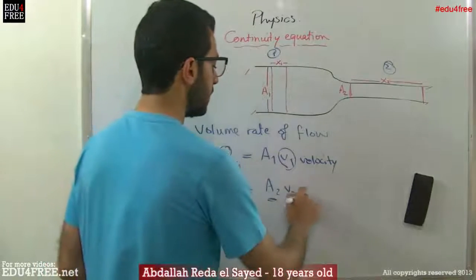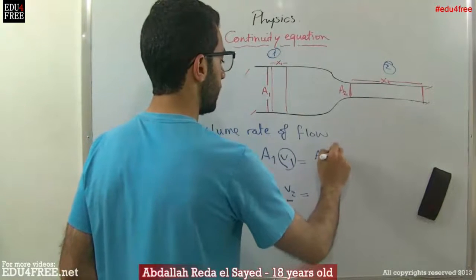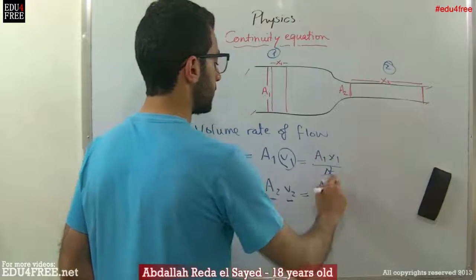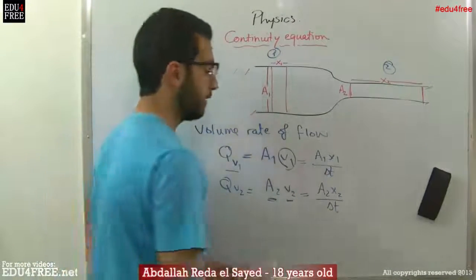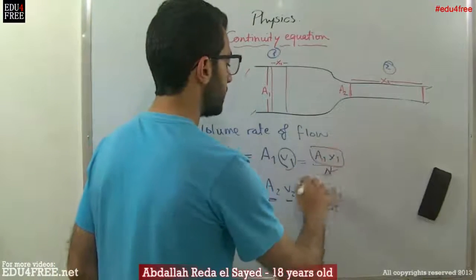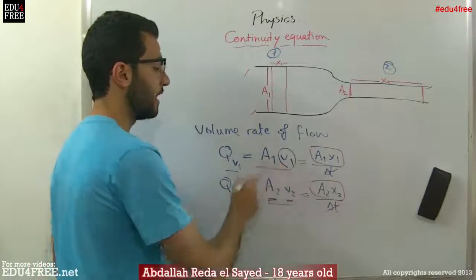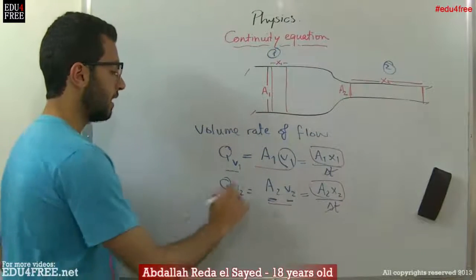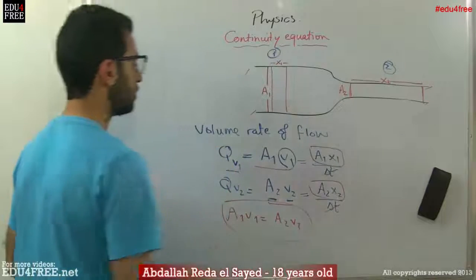The volume equals A1 multiplied by X1 over T, and also A2 multiplied by X2 over T. Since T is constant and has the same value, these two expressions must be equal because the volume is the same. At that point, we can say that A1 V1 equals A2 V2, and from this equation we can derive the continuity equation.